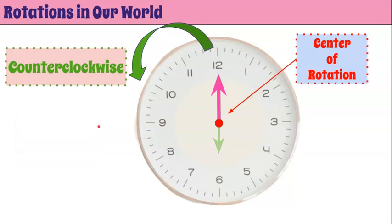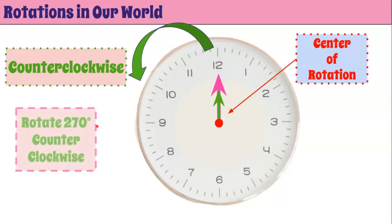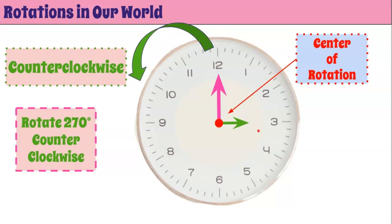Our third is rotating 270 degrees counterclockwise, which is three 90-degree turns — one, two, three — landing us pointing to the three. Noting that 270 degrees counterclockwise gives us the same location as rotating 90 degrees clockwise.